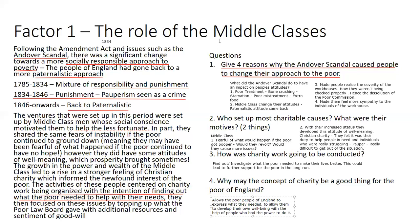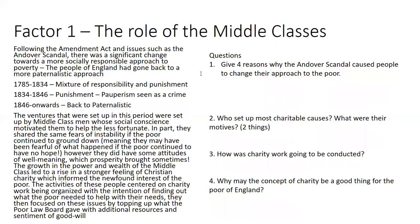After the Andover Scandal, the poor law commission was dissolved. We now had individuals who might be able to help a little bit further. That concludes the first factor — the role of the middle class — in explaining how charitable and philanthropic activity developed in this period.